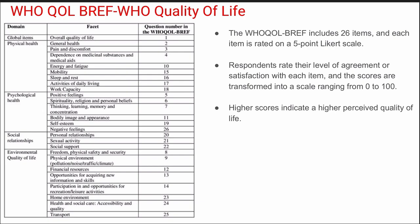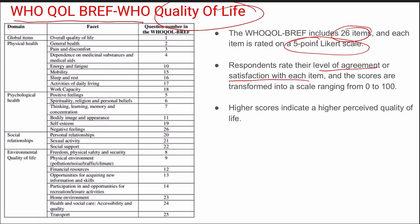Next on the list is WHO QOL for measuring the quality of life. It includes 26 items. Each item has a 5-point Likert scale response and the respondents rate their level of agreement or satisfaction with each item in this brief questionnaire. The scores are transformed into scales ranging between 0 to 100, and a higher score indicates higher perceived quality of life.